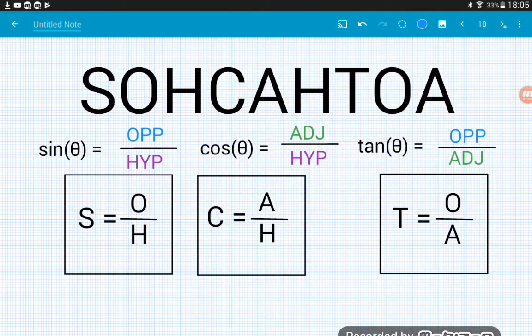So if we take SOH, for example, S-O-H, S is sine, O is opposite, H is hypotenuse. So SOH tells us that the sine identity is to do with the opposite and hypotenuse.